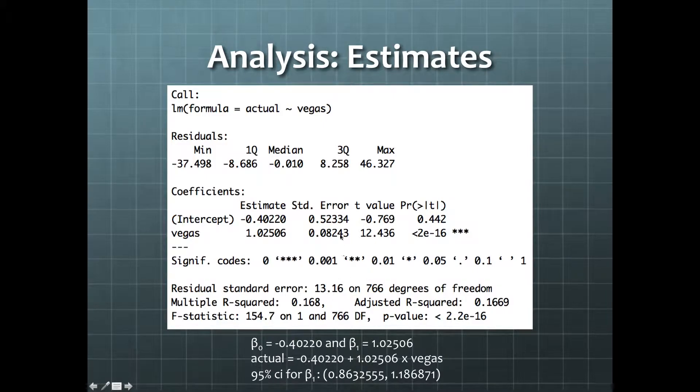We can also use the standard error to create a 95% confidence interval for beta1, shown at the bottom.